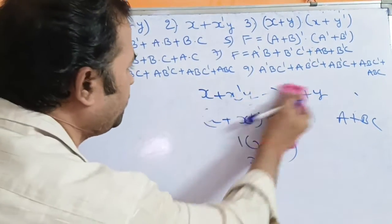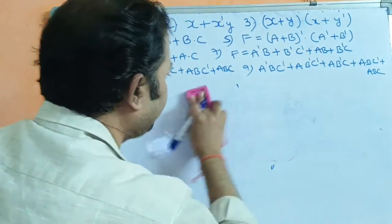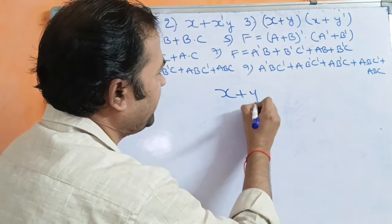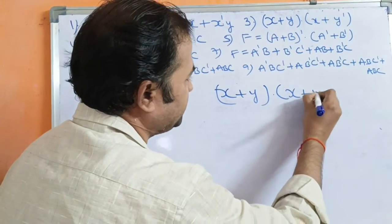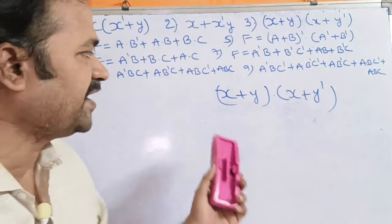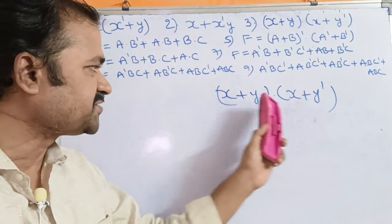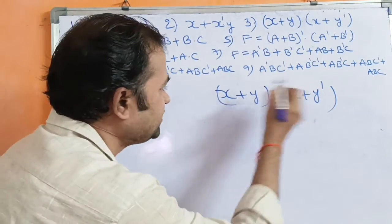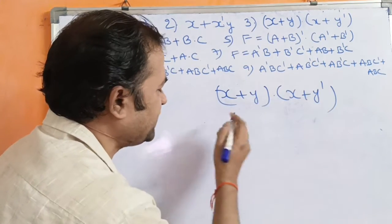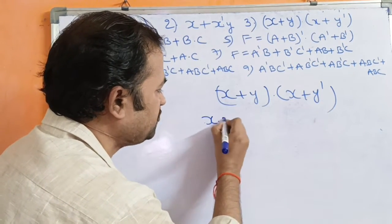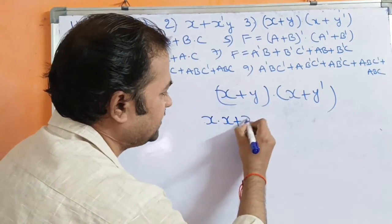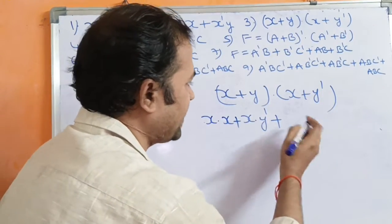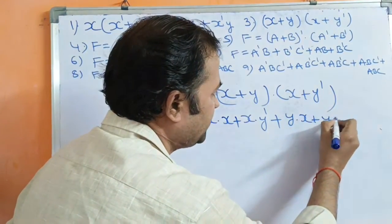Now let us see the third example: (X+Y)(X+Ȳ). Multiply X with (X+Ȳ) and Y with (X+Ȳ) using distributive law. First, multiply X with X giving X·X, then X with Ȳ. Next multiply Y with X and Y with Ȳ, giving Y·X + Y·Ȳ.